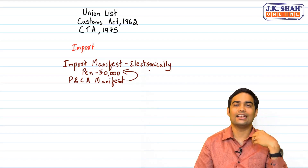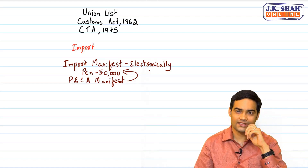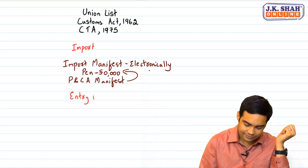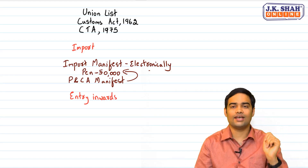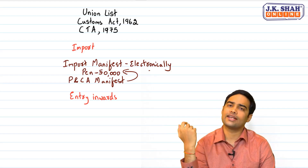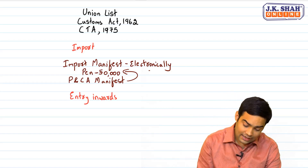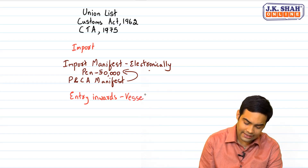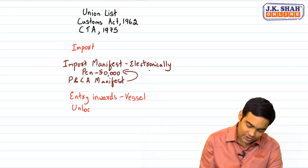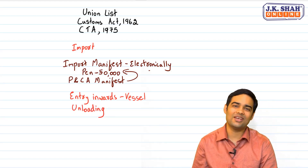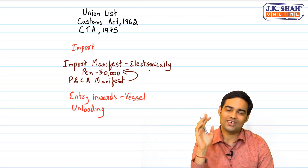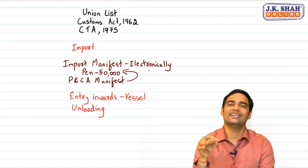After the person in charge submits the import manifest to the proper officer, the proper officer gives an 'entry inwards'. Entry inwards signifies that the vessel can now come to the port. This is not required for aircraft or vehicles — only for a vessel. Until entry inwards is given, unloading cannot begin. Only those goods mentioned in the import manifest can be unloaded.